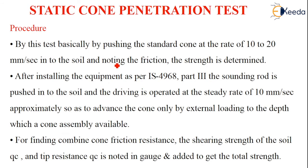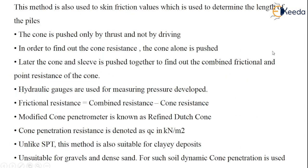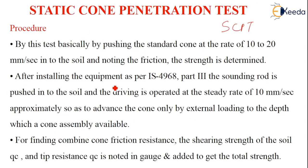Coming to the next test, the Standard Cone Penetration Test (SCPT): in this test, a standard cone is pushed into the soil at a rate of 10 to 20 mm per second, and the friction and strength are noted. After equipment installation as per IS 4968 Part 3, the sounding rod is pushed into the soil at a steady rate of approximately 10 mm per second to advance the cone by external loading. For finding the combined cone friction resistance, the shearing strength QC and the tip resistance QC are noted on the gauge and added to get the total resistance.